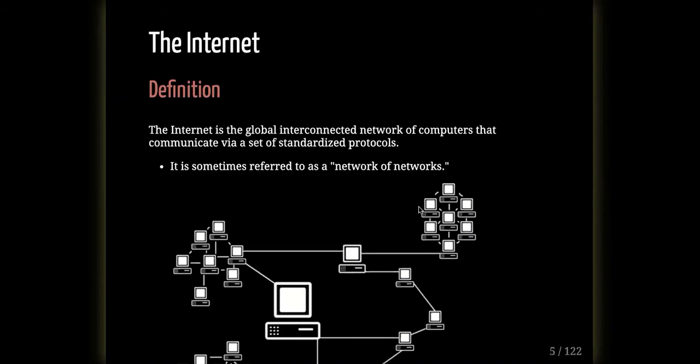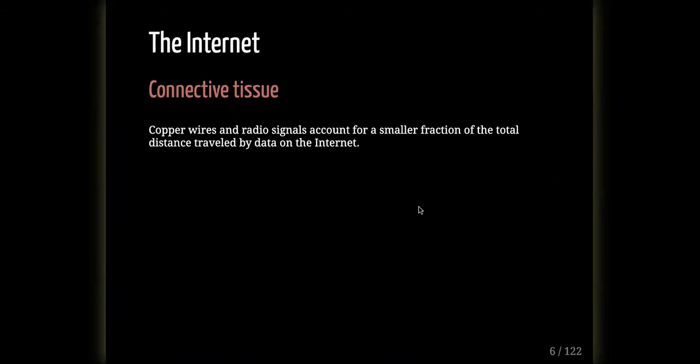The internet is sometimes called the 'network of networks.' This diagram shows clusters of networks all over the world — for example, NYU has its own network, the CS department has its own network within that, which bundles into a regional New York City network, connecting to other networks around the country with their own sub-networks. All these mini-networks are connected together, usually with fiber optic cables.